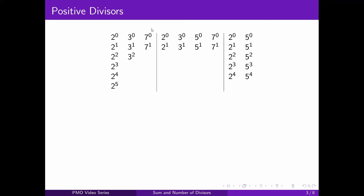So ignore the middle and the right — just focus on the left part first. This is the representation for 2016. Remember 2016 is 2 raised to 5 times 3 squared times 7 raised to 1. What we've done is made three columns, one for each prime, and you list all the powers from 2 raised to zero until the highest power that divides 2016. We choose one number from each column and then multiply those numbers together. For example, let's say I choose 2 raised to 1, 3 squared, 7 raised to zero — multiplied together, that gives 18, and 18 is indeed a factor of 2016.